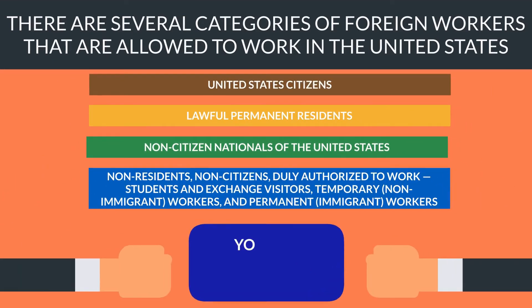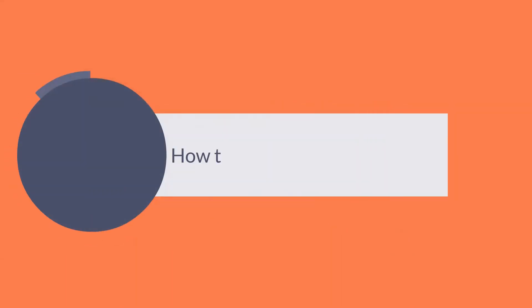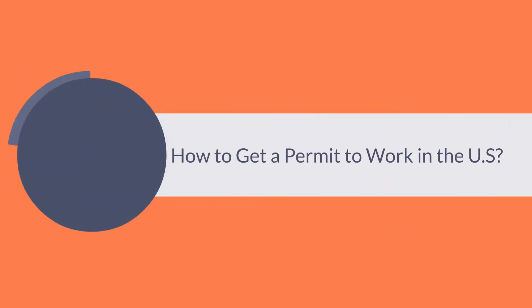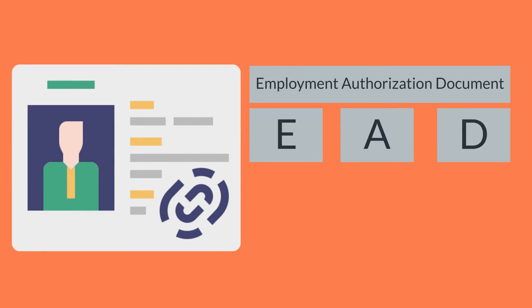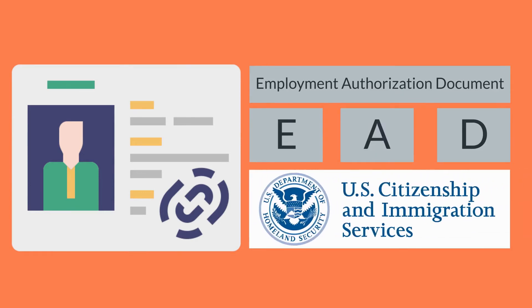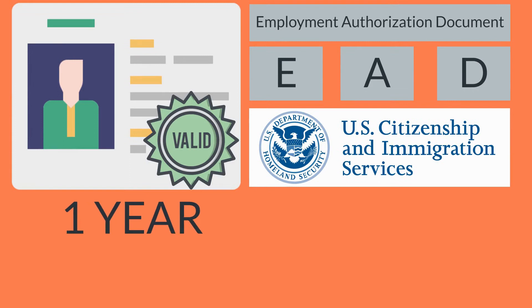The permit to work in the US is called an Employment Authorization Document, also known as an EAD card. It is issued by the United States Citizenship and Immigration Services. The EAD card is typically valid for one year and you can renew or replace it after it expires or if it is lost.